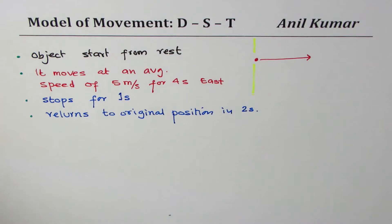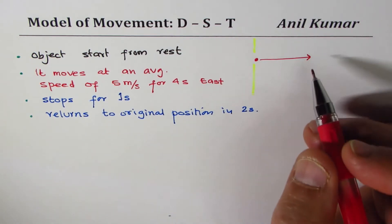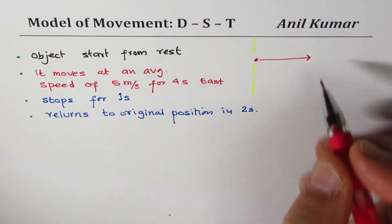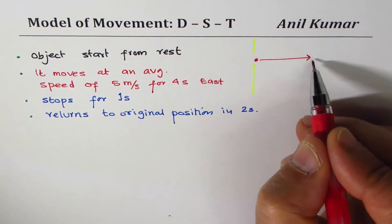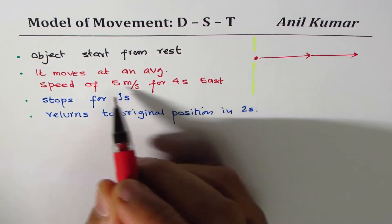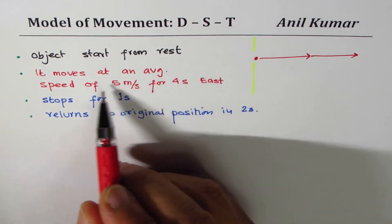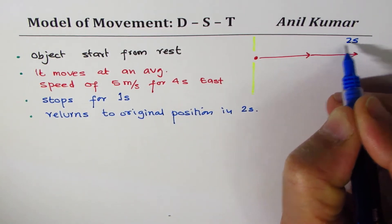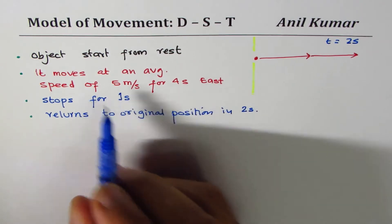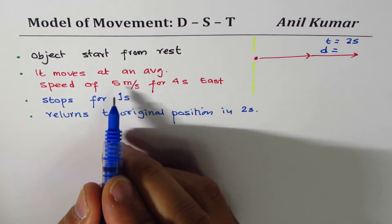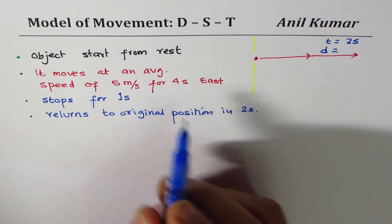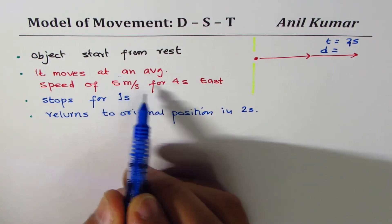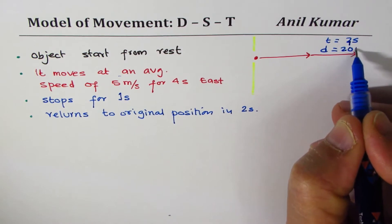Let's work out the whole distance covered. It moves at five meters per second for four seconds, so the distance will be five times four, which is twenty meters.